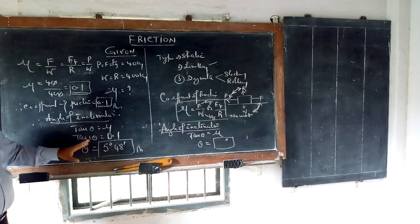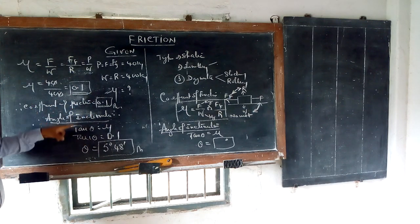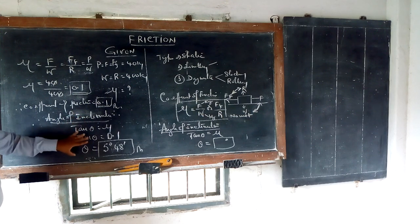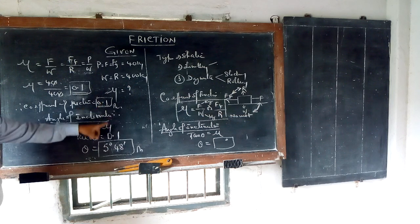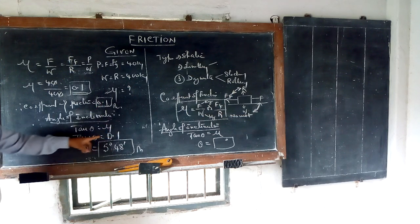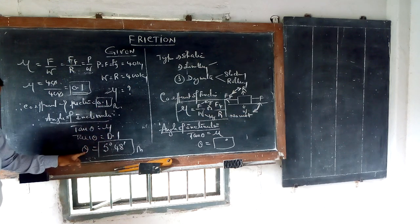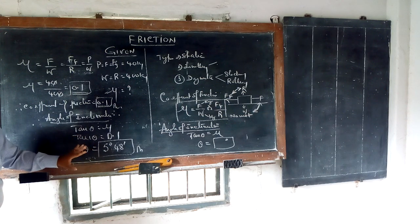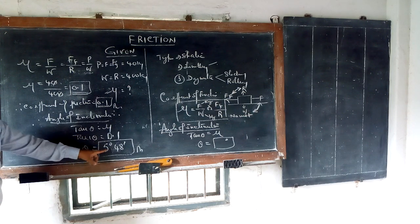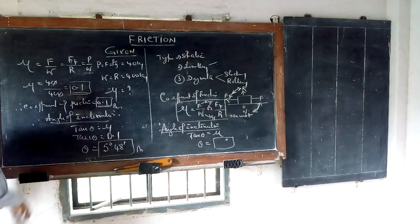Next, if they ask angle of inclination, then you must be able to calculate that. Tan theta, in the first sum it is not asked but I am training. Tan theta is equal to mu. The value of mu you put it here. So 0.1. You already have calculated, now to take the calculator only can take tan inverse value. Theta is equal to 5 degrees 48 minutes.